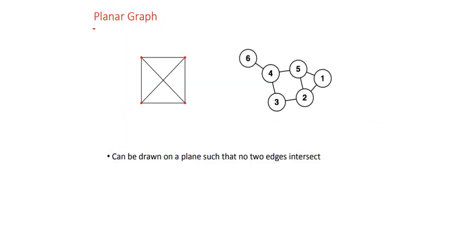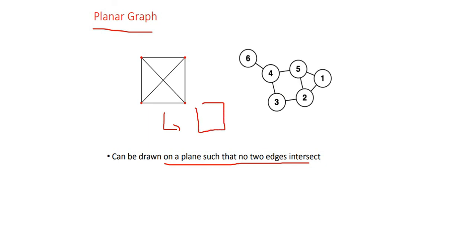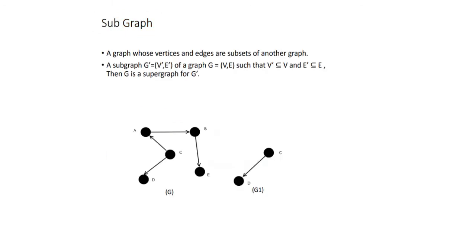A planar graph is a graph that can be drawn on a plane such that no two edges intersect. A diagram with intersections cannot be planar, but the same graph redrawn without intersections is planar. To make a 4-vertex graph planar, you can draw one diagonal but not the other — since it would intersect — and instead route that connection around the outside. This gives you the planar version of the graph.